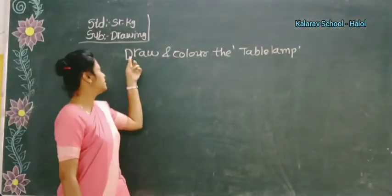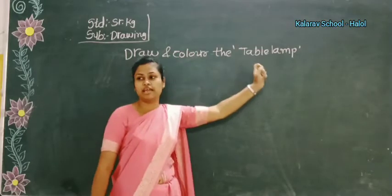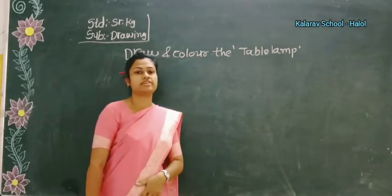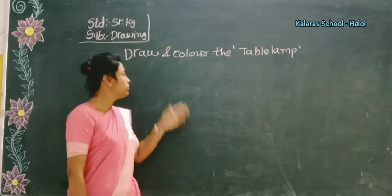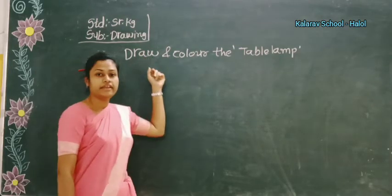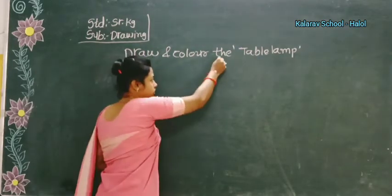Today's topic is draw and color the table lamp. First, a request for parents: you will write in your child's drawing book the date, and then in between draw a line.